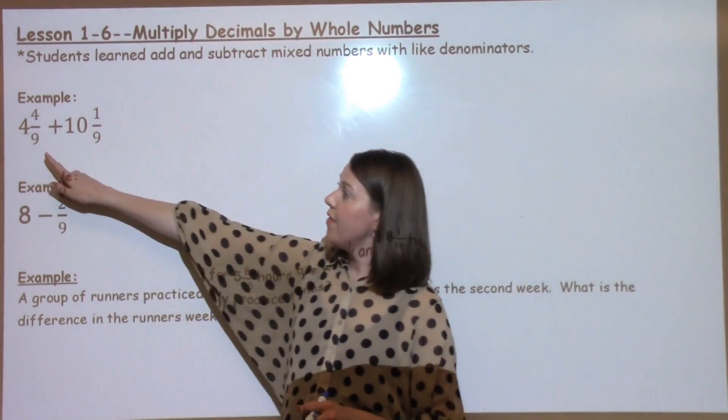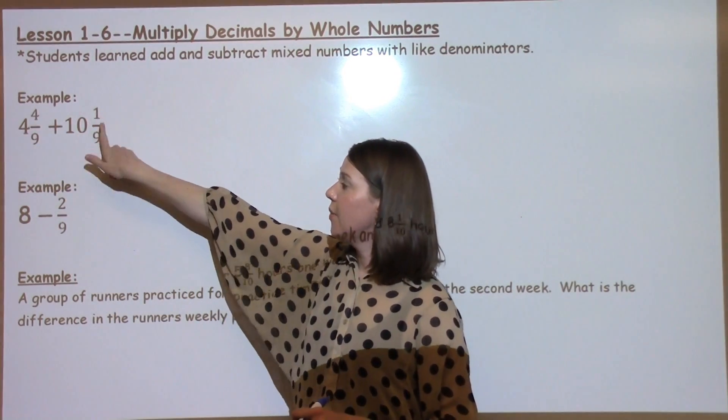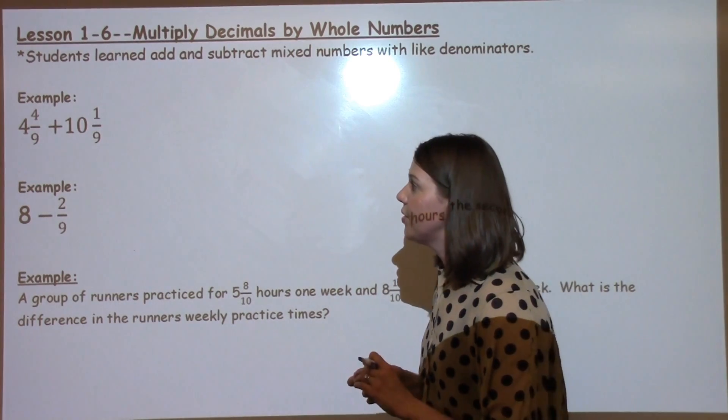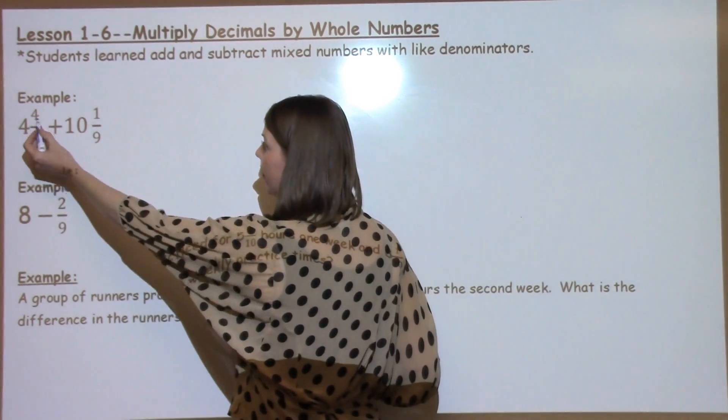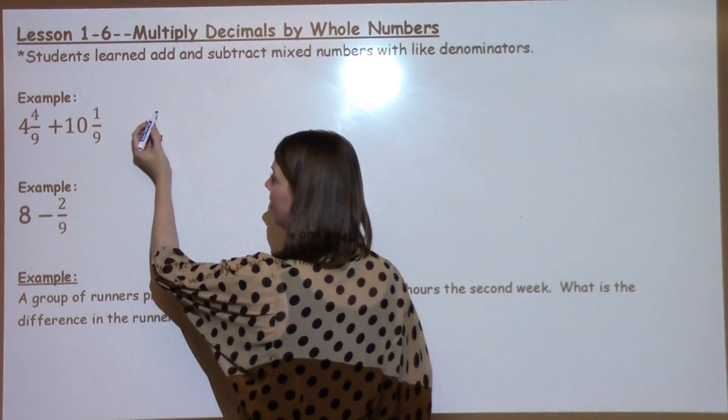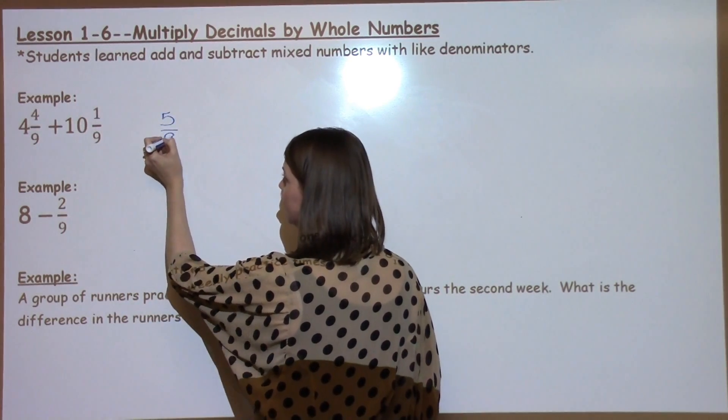The first problem we have is 4 and 4 ninths plus 10 and 1 ninth. The first thing 5th graders do is we go ahead and add our fractions. So we've got 4 and 4 ninths plus 1 ninth is 5 ninths.